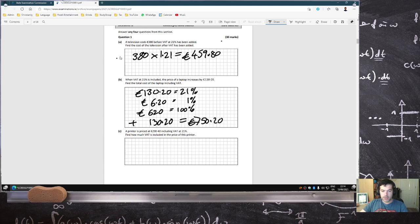A printer is priced at 290.40 including VAT at 21%. Find how much VAT is included in the price of this printer. Okay, so the 290.40 is 121%. So that means 240 is 1%. So then 21%, which is the VAT, just multiply this by 21. 50.40.